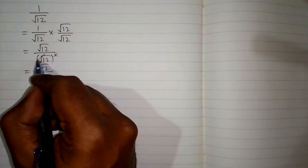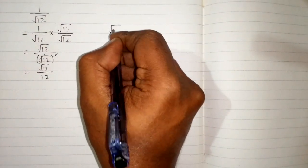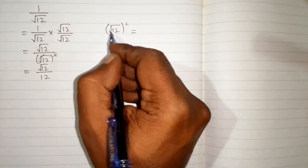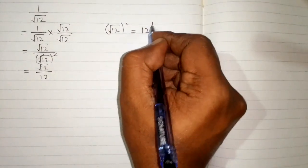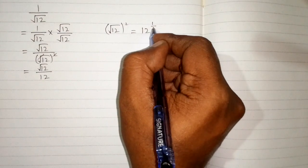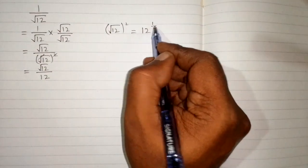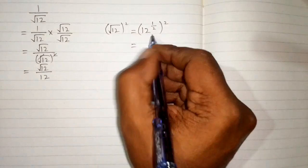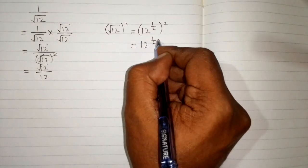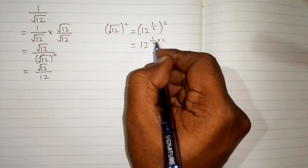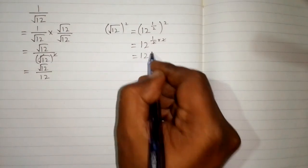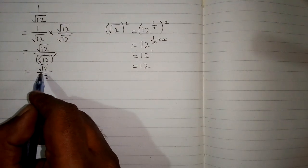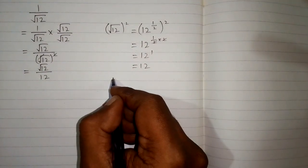Now, why can we cancel the square root and the square? To understand this, we write the square of square root of 12. By the definition of square root, we can write it as 12 raised to the power 1/2, because square root means power 1/2, and the whole thing has power 2. By the rule of indices, we multiply the powers: 1/2 multiplied by 2. The 2s cancel, giving us 12 raised to the power 1, which is simply 12. So we have square root of 12 upon 12.